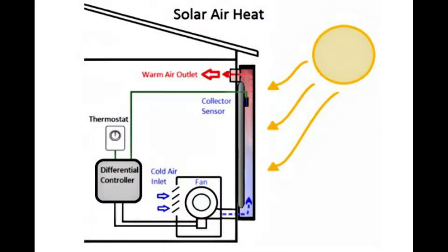The solar collectors used in solar air heating systems use air as the fluid for capturing the solar thermal energy and transferring that heat to your living space. In the most common setup, the collector draws cool air from the house, heats it, and returns the now-heated air to the living space.